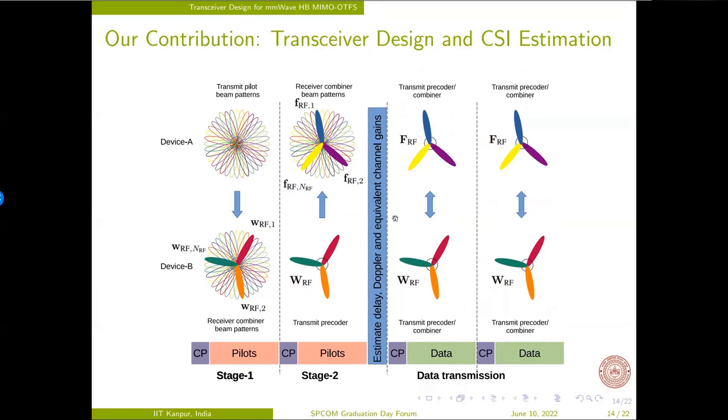Here, the key difference in stage one and stage two is to select an RF number of beams for designing the RF precoder and combiner, followed by block sparse Bayesian learning for efficient DD domain CSI learning.